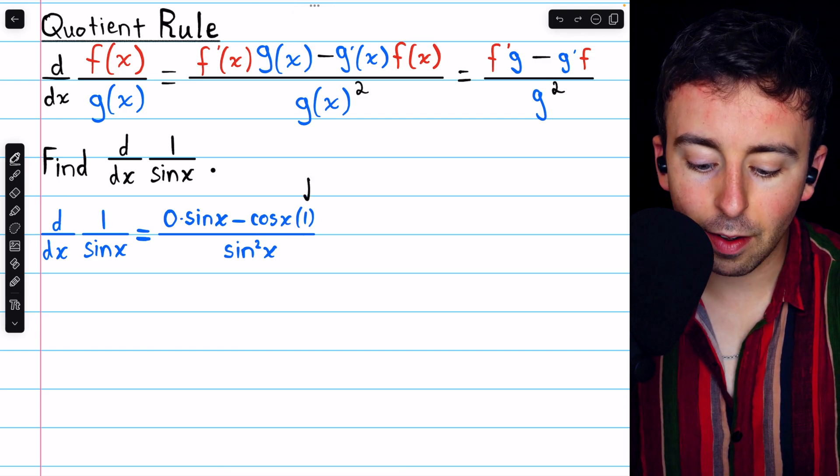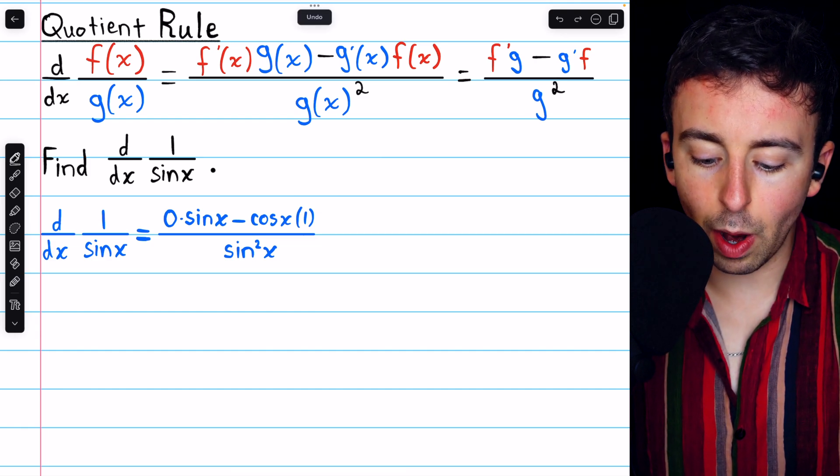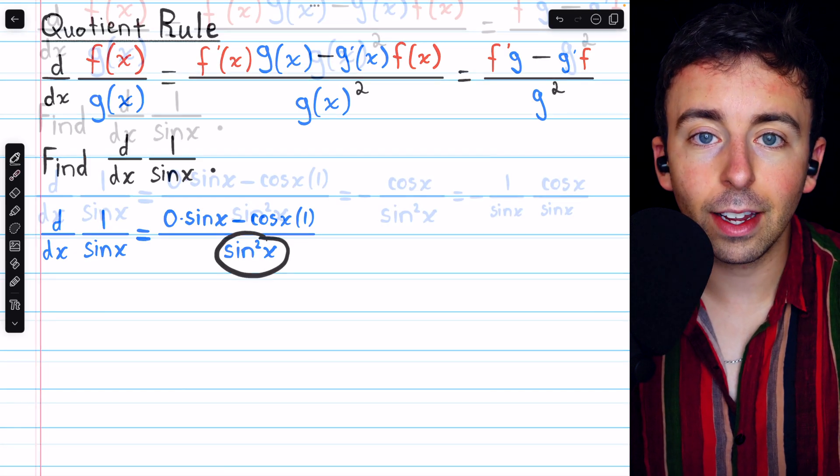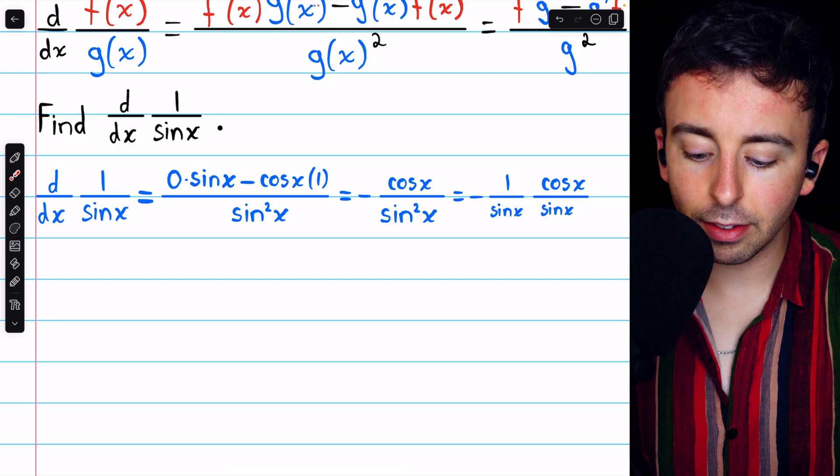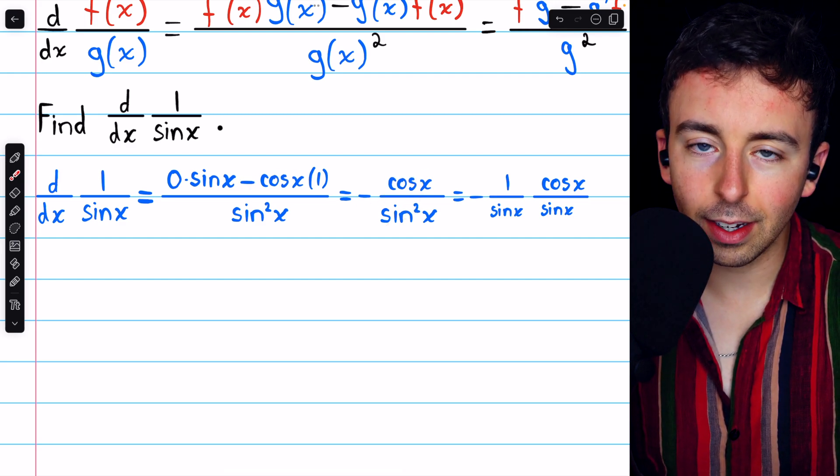And then we multiply that by f, which of course is just 1. This then gets divided by g squared, and g is sine x, so g squared is sine squared x. So then in the numerator, we have 0 minus cosine x. So this is minus cosine x over sine squared x.